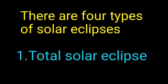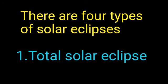There are four types of solar eclipses. Number 1: Total Solar Eclipse. A total solar eclipse occurs when the sun, moon and the earth come in a straight line. In this, the moon completely blocks the sun and casts a shadow over the earth.